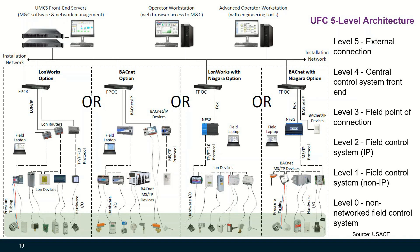In this UFC five-level HVAC control system architecture: Level one, field control system non-IP network, is equivalent to the field control network discussed earlier. Level two, field control system IP network, is equivalent to the building control network discussed earlier. Level three, field point of connection devices, provides an additional layer of security protection for the building automation system.